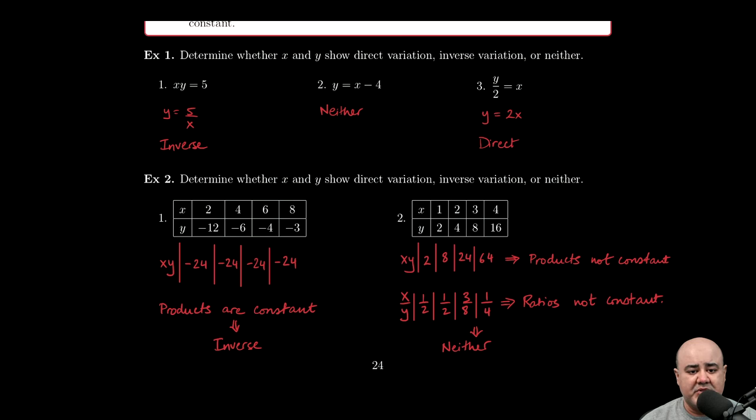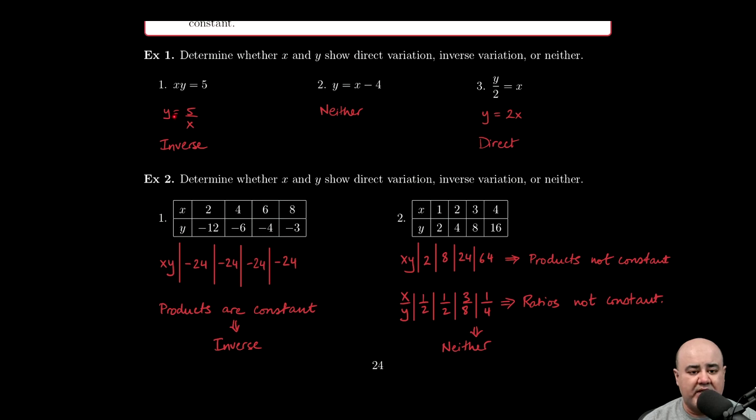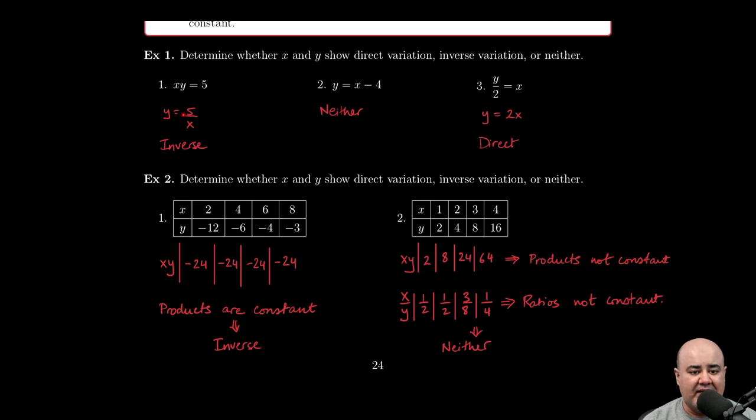Let's look at some brief examples. We're asked to determine whether x and y in these three examples show direct variation, inverse variation, or neither. The first example is xy = 5. Ideally, you want to rewrite it so that y is by itself on one side and x is on the other side, because that clarifies the location of y, x, and a. If we divide both sides by x, we end up with y = 5/x. This reminds us of y = a/x, a constant divided by x, so this yields inverse variation. The relationship between x and y here is that they vary inversely to each other.